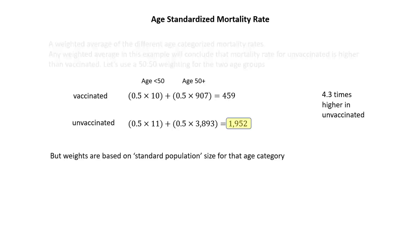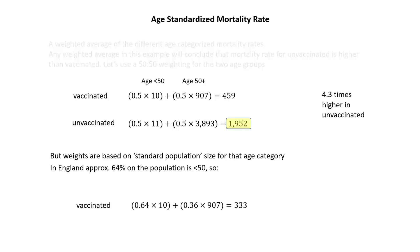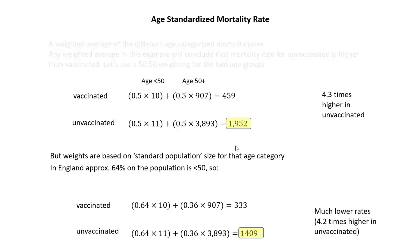The results are quite sensitive to the particular weights, which is why we're supposed to use weights based on standard population size for each age category. In England, approximately 64% of the population is under 50 and approximately 36% is 50-plus. Using those weightings — 0.64 and 0.36 — the age-standardized mortality rate for the vaccinated is 333 and for the unvaccinated is 1,409.